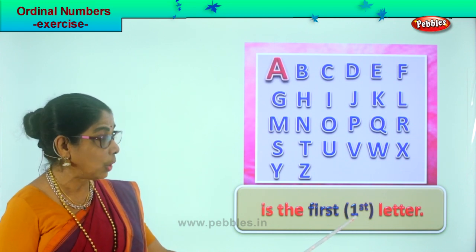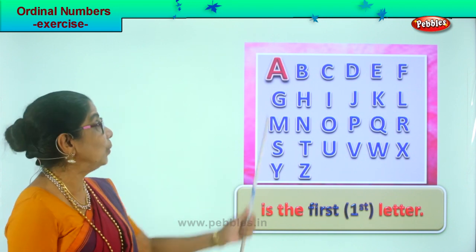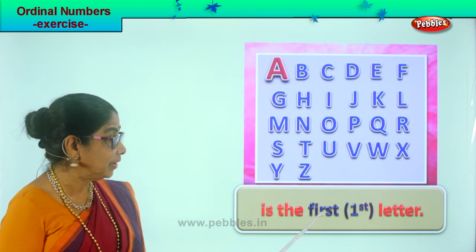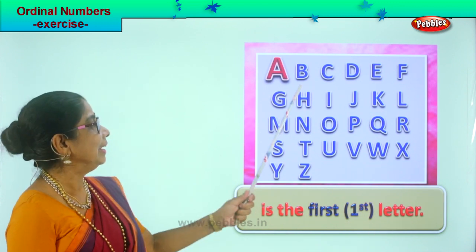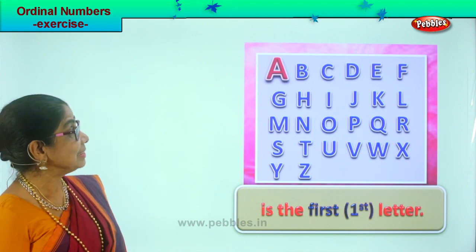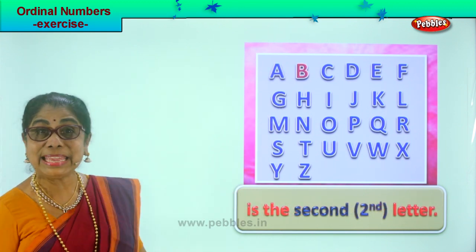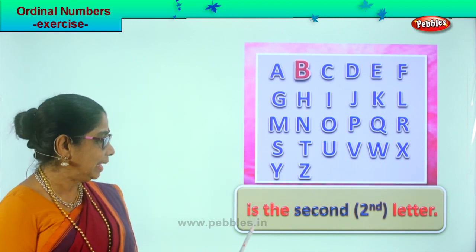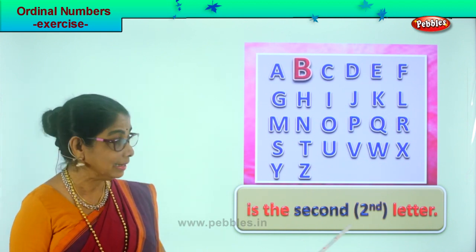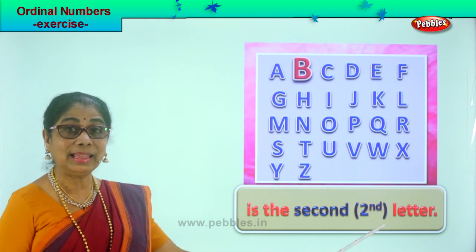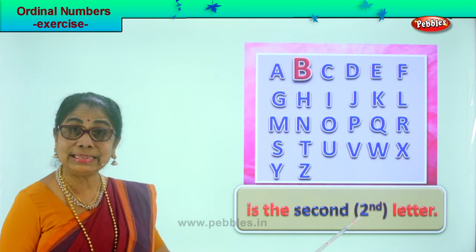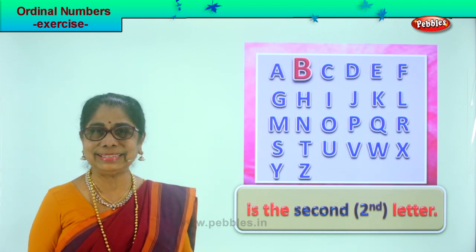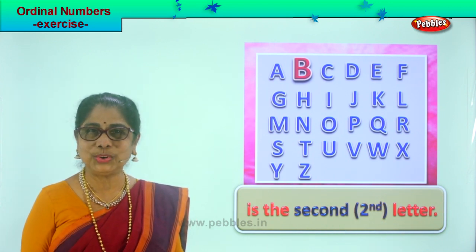A represents first — you write number one and ST, so A is the first letter. Now let's take the second letter. Letter B — B is the second letter. The representation is number two and ND. B is the second letter.